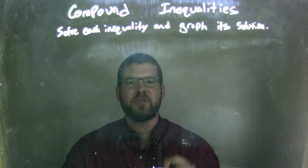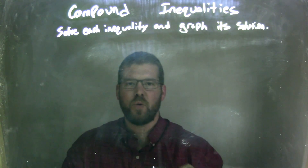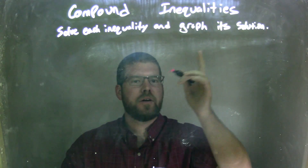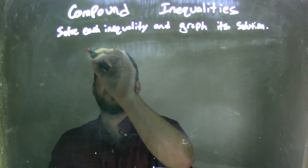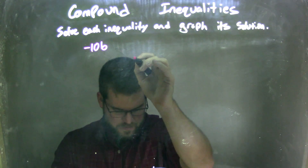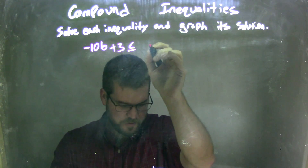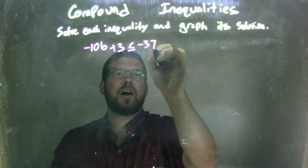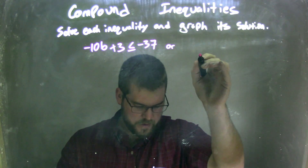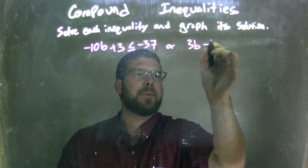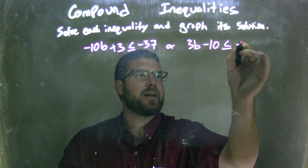Hi, I'm Sean Yen and this is MinuteMap. Today we're going to learn about compound inequalities and we're going to solve each inequality and graph its solution. We're given the inequality: negative 10b plus 3 is less than or equal to negative 37, or the inequality 3b minus 10 is less than or equal to negative 25.